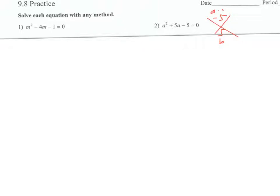In this case, that's actually not possible. With five, we can only do five and one, and there's no way to mess around with the negatives to make that add up to five. So I'm going to switch to the quadratic formula: X equals negative B plus or minus the square root of B squared minus 4AC, all over 2A.